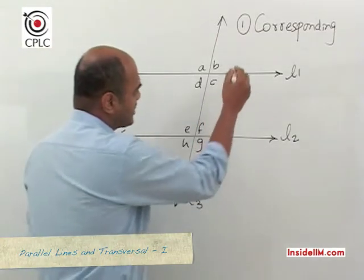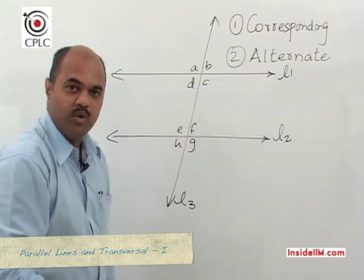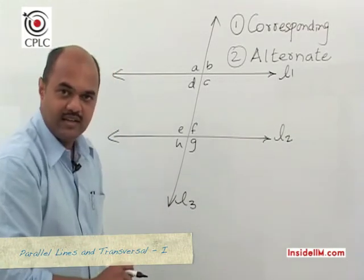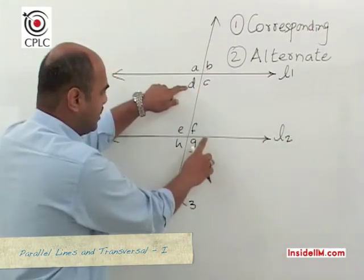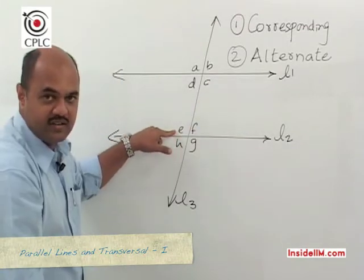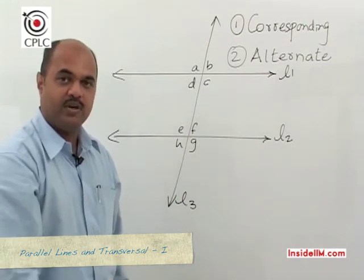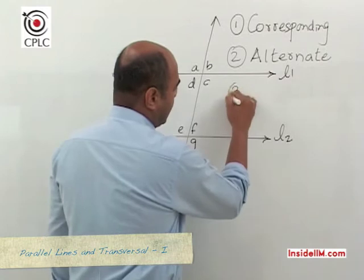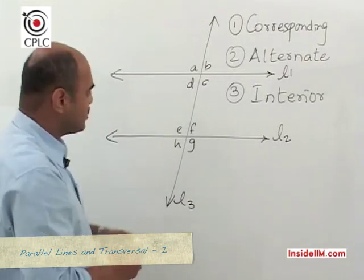A second type is called alternate angles. In school, alternate angles are often taught as angles which form a Z. Looking at our diagram, angle D and angle F form a Z and are alternate angles. Similarly, angles C and E are alternate angles. So there are two pairs of alternate angles — D and F, and C and E — and the property is that alternate angles are equal.